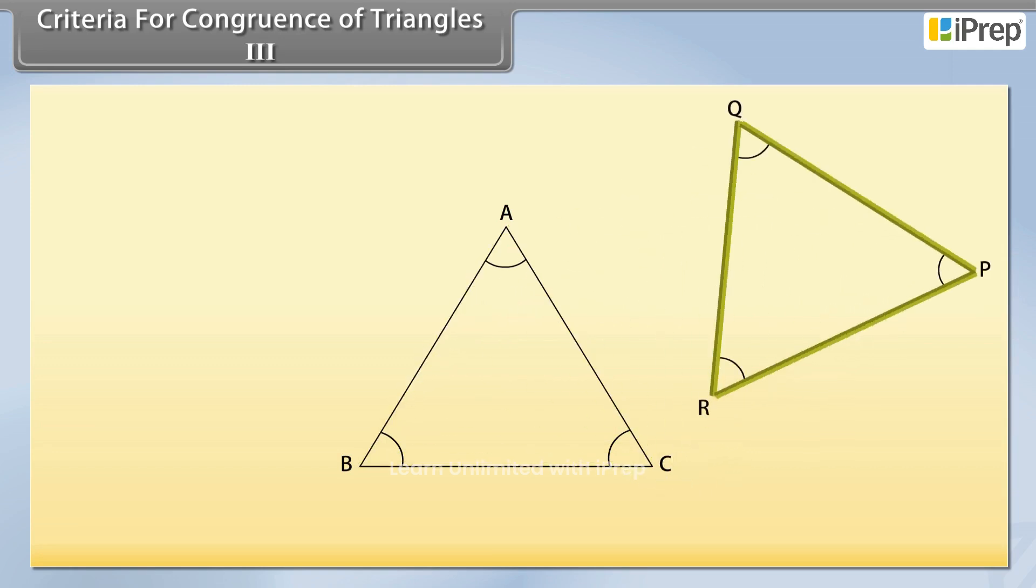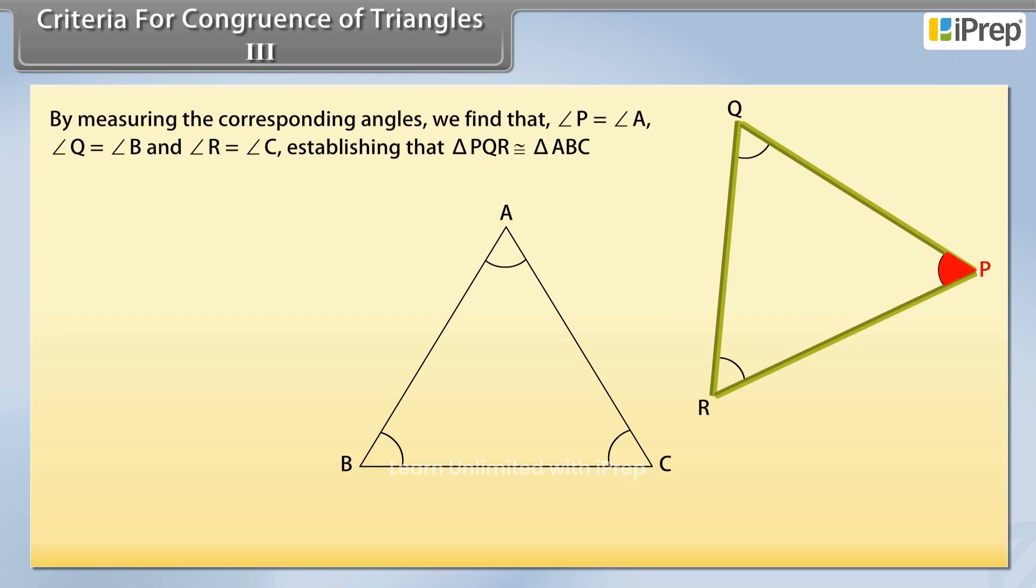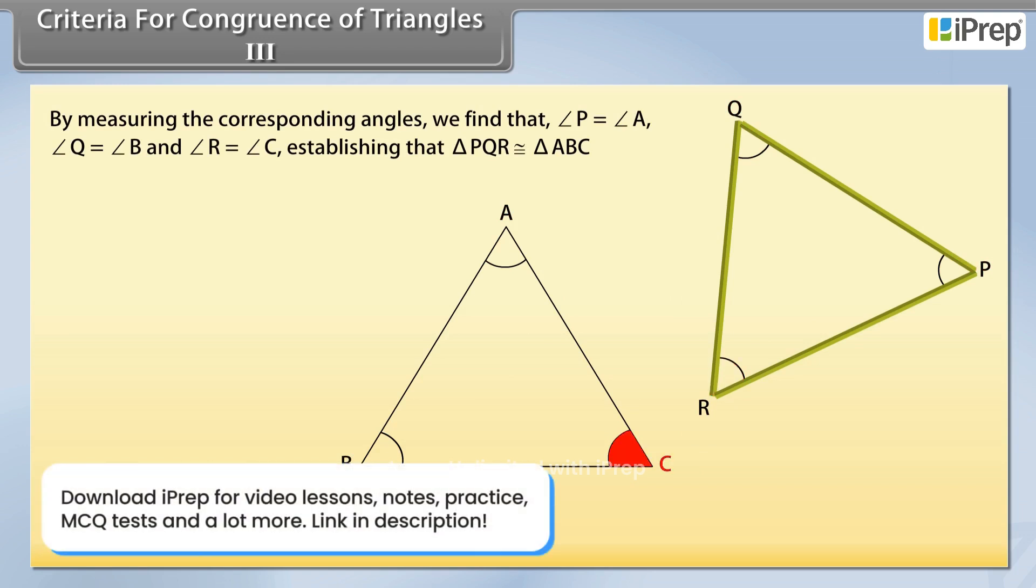Place them in any order to form triangle PQR near the triangle ABC. By measuring the corresponding angles, we find that angle P is equal to angle A, angle Q is equal to angle B, angle R is equal to angle C, establishing that triangle PQR is congruent to triangle ABC.